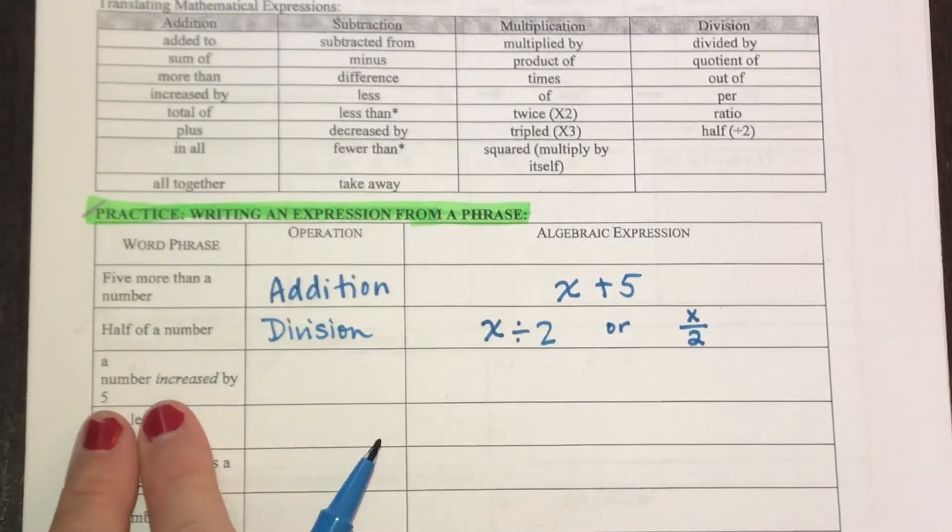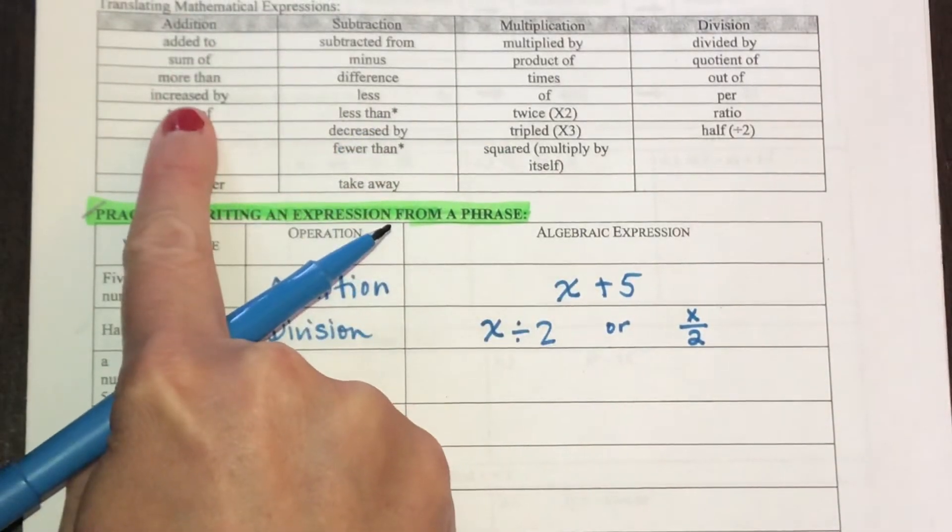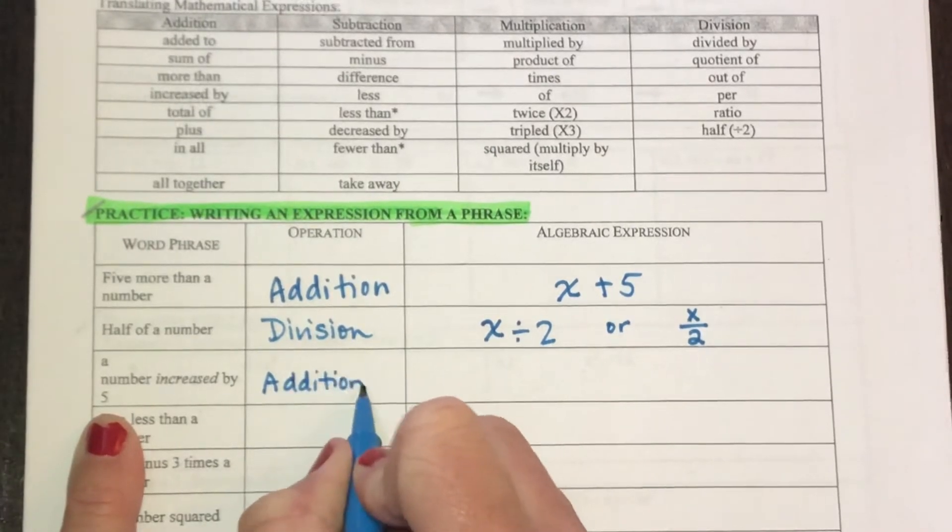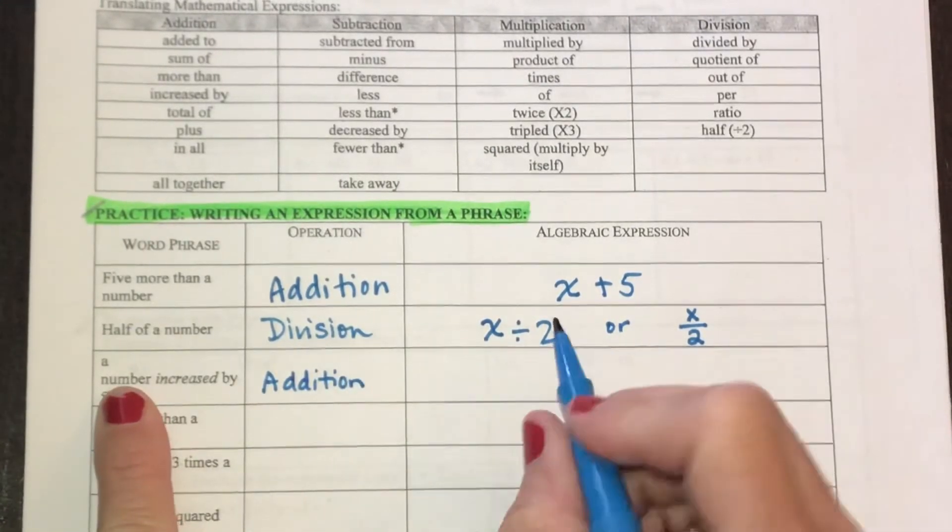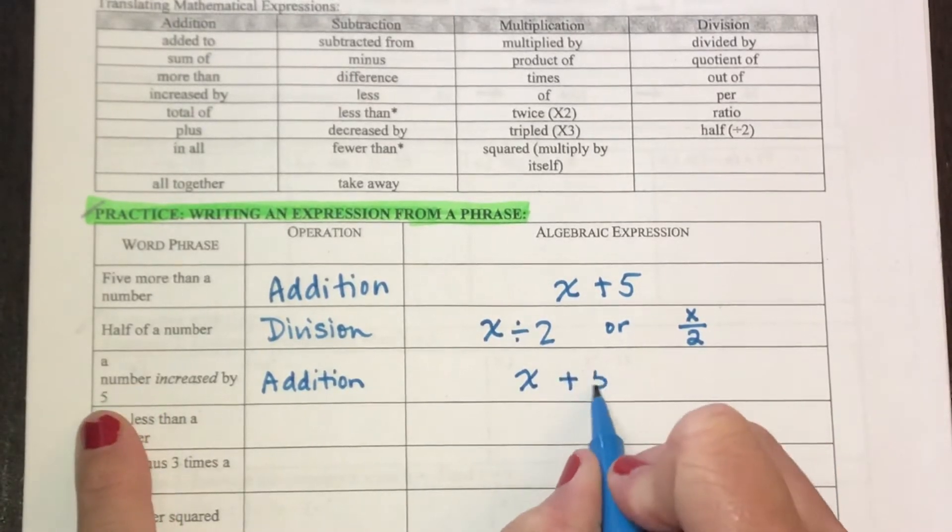For the next phrase, we have a number increased by. Increased by. Increased you'll see up here in the addition. So a number, I don't know what that number is, so I'm going to use a variable X. And increased by means add five to it.